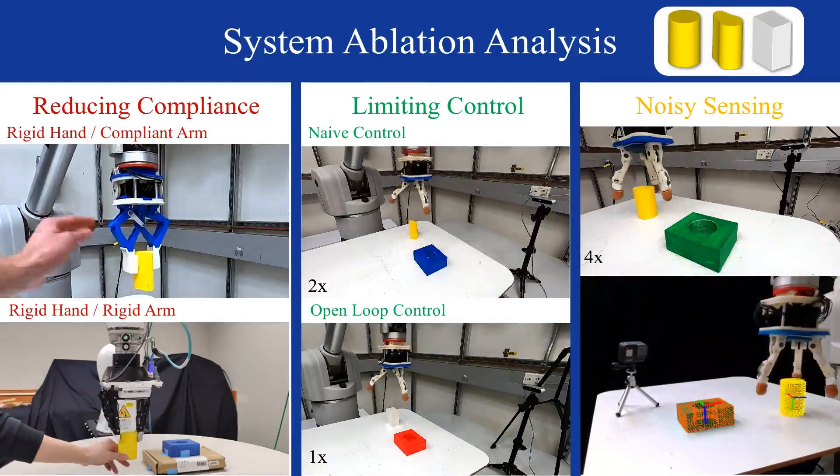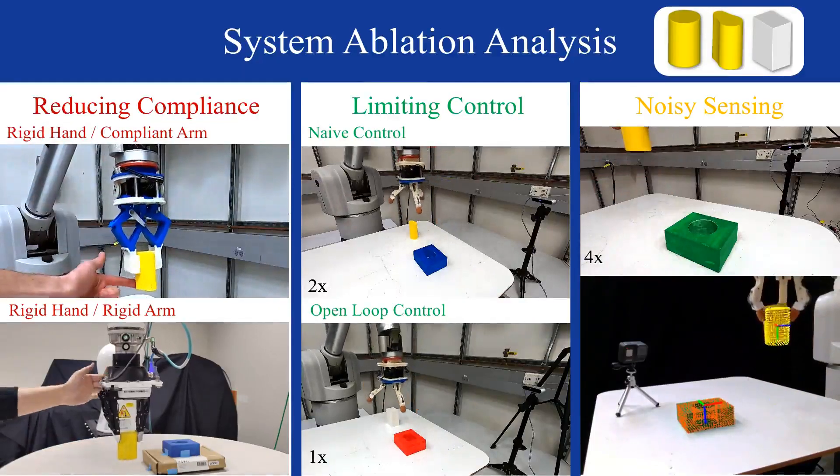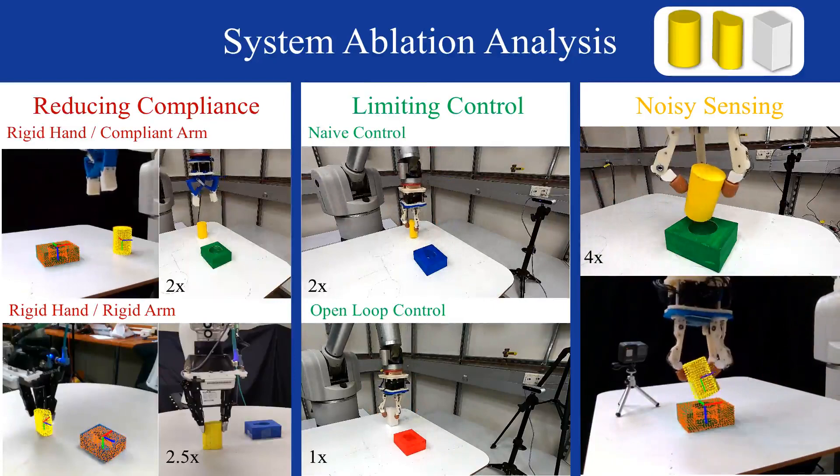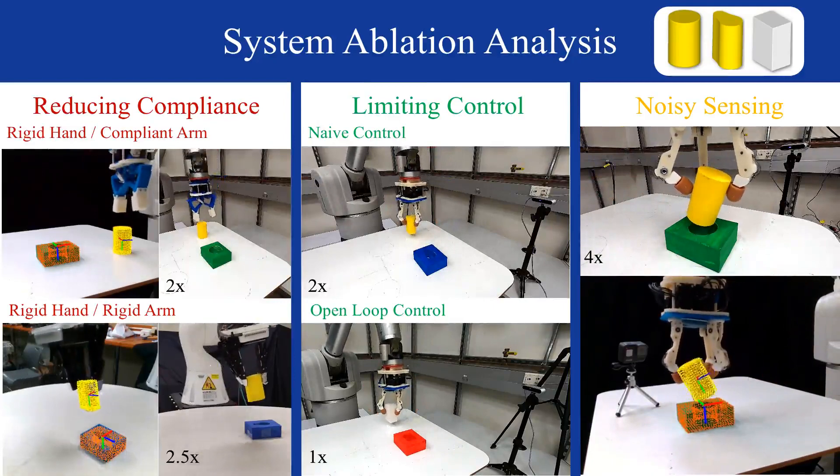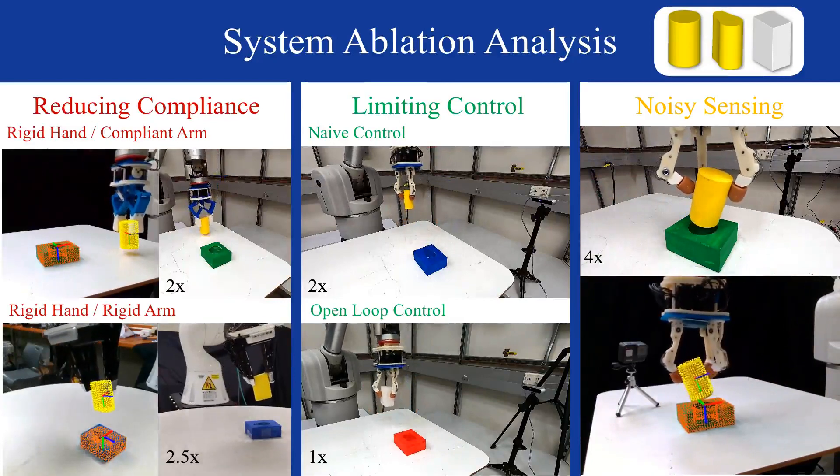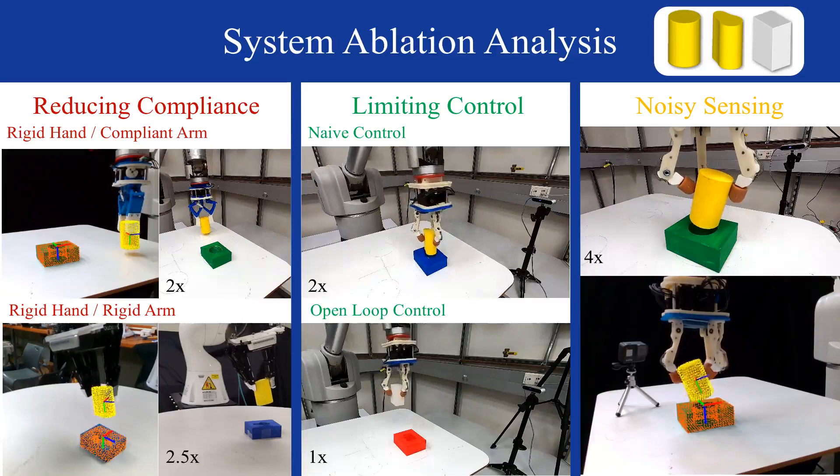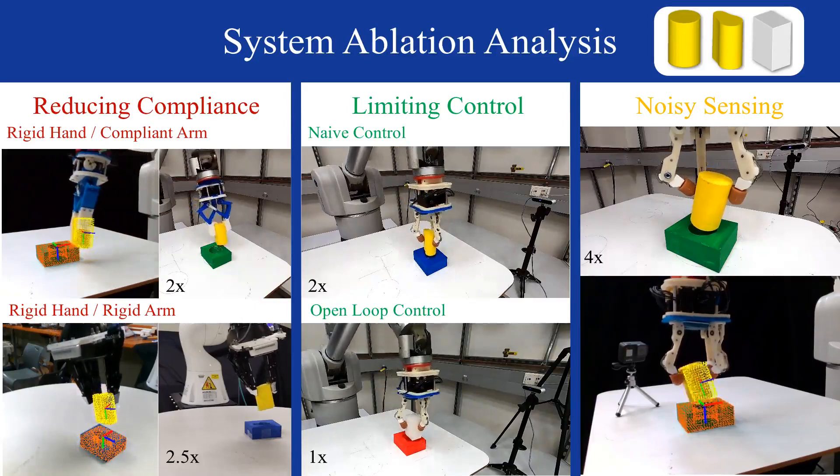Our work evaluates ablations by looking at success while removing individual system components, namely reducing compliance, limiting control, and adding noise to the sensor's estimated pose. We evaluate three of the five test objects, where we note lower rates of success for each.